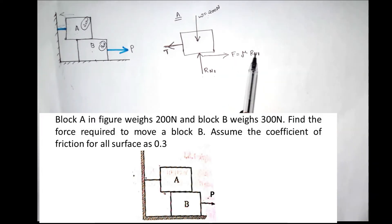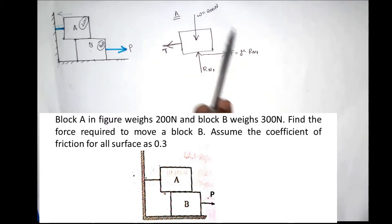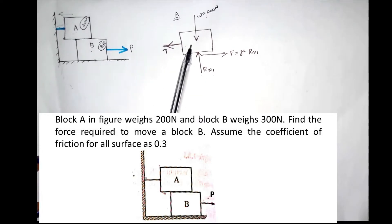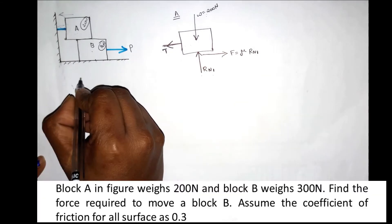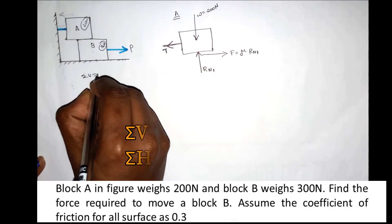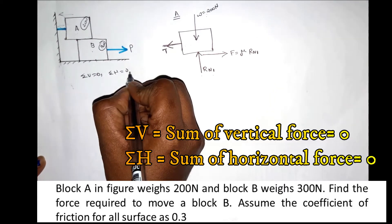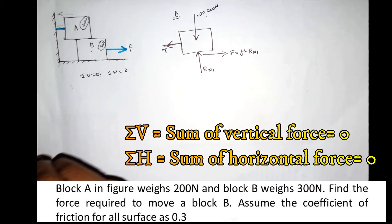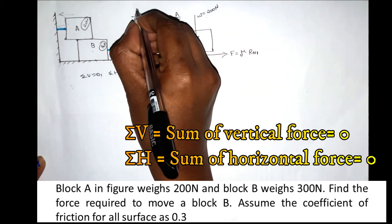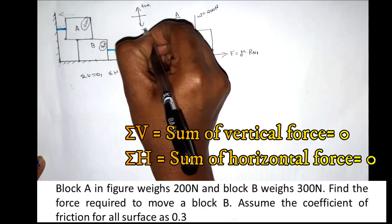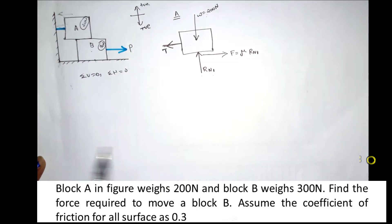The friction force equals mu into Rn1. We consider Block A and apply equilibrium equations: Sigma V equals 0, and Sigma H equals 0. The sign convention is upward force as positive and downward force as negative.